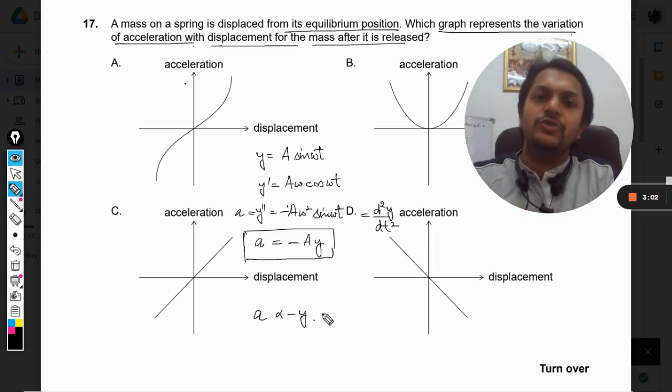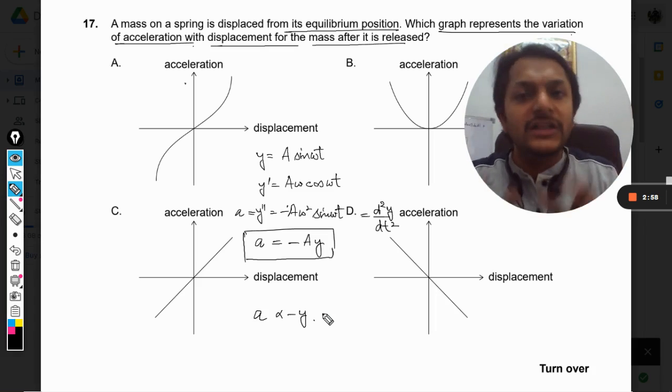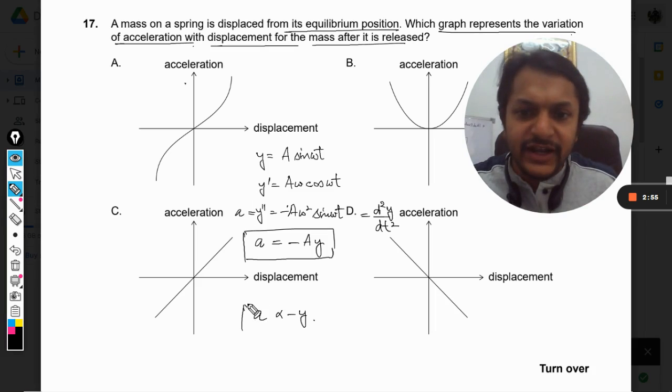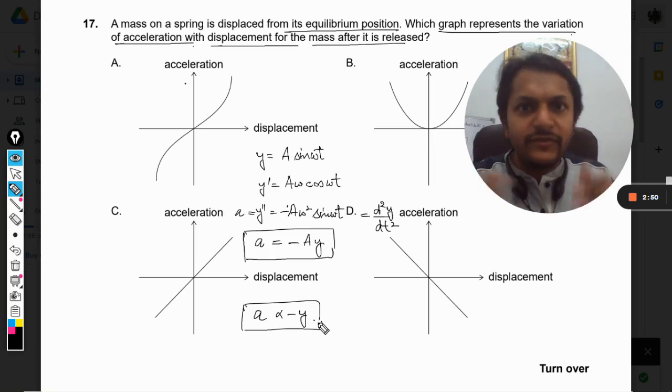And in simple harmonic motion, it is the condition that acceleration is directly proportional to the negative of displacement. So instead of doing all this thing, you could have directly jumped to this conclusion also.